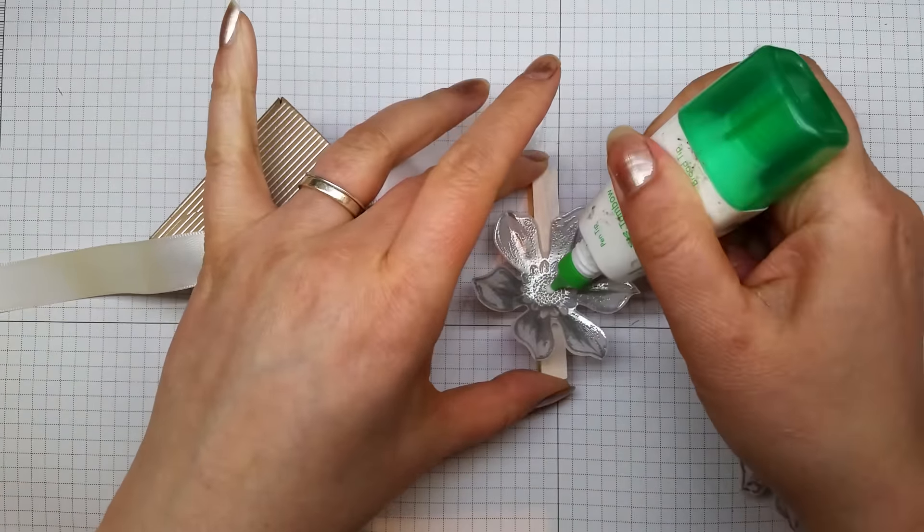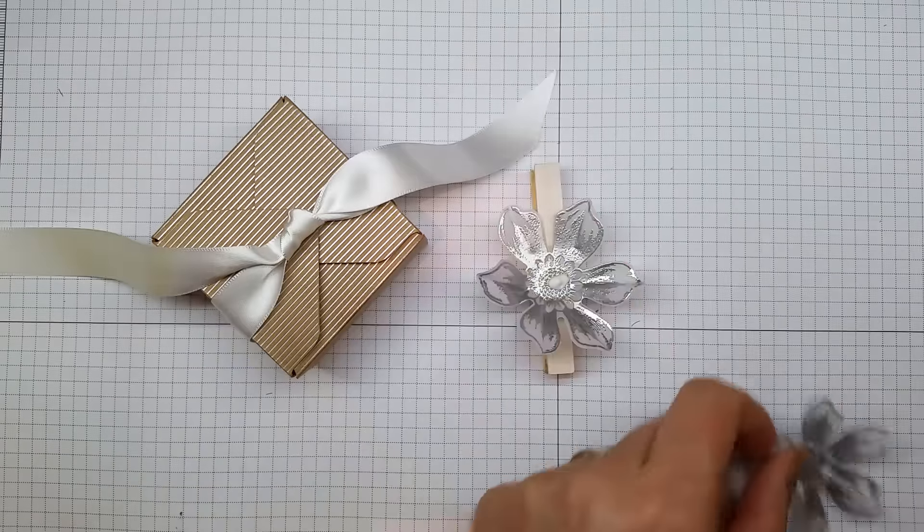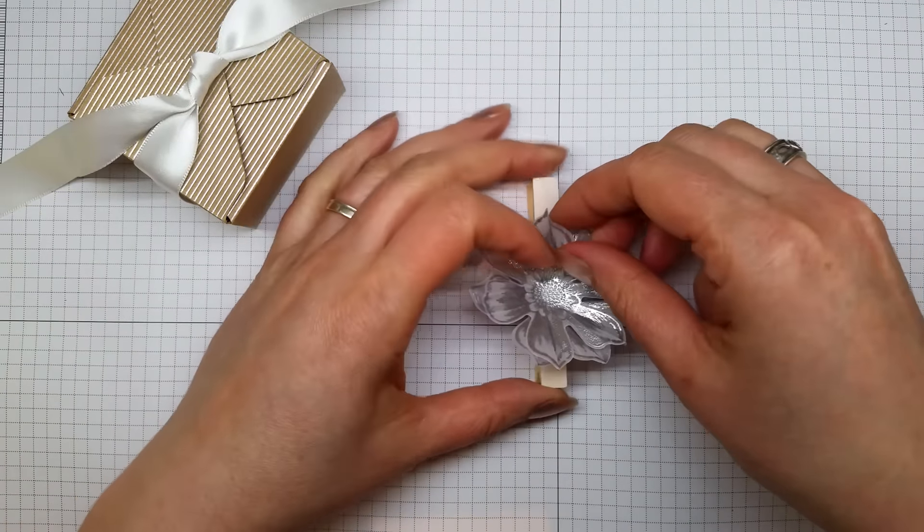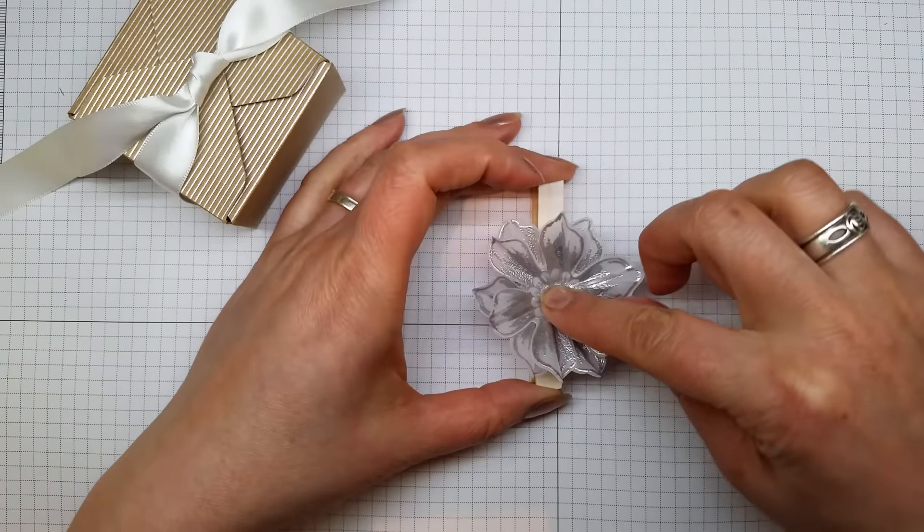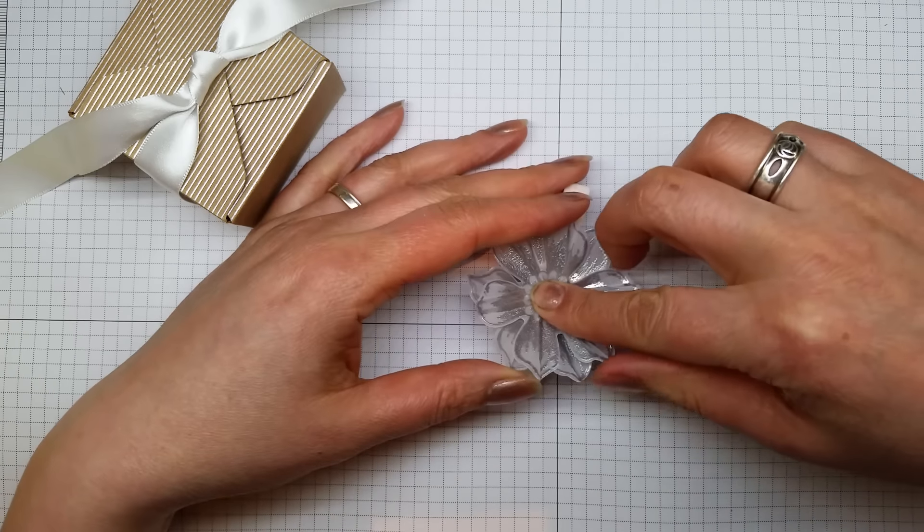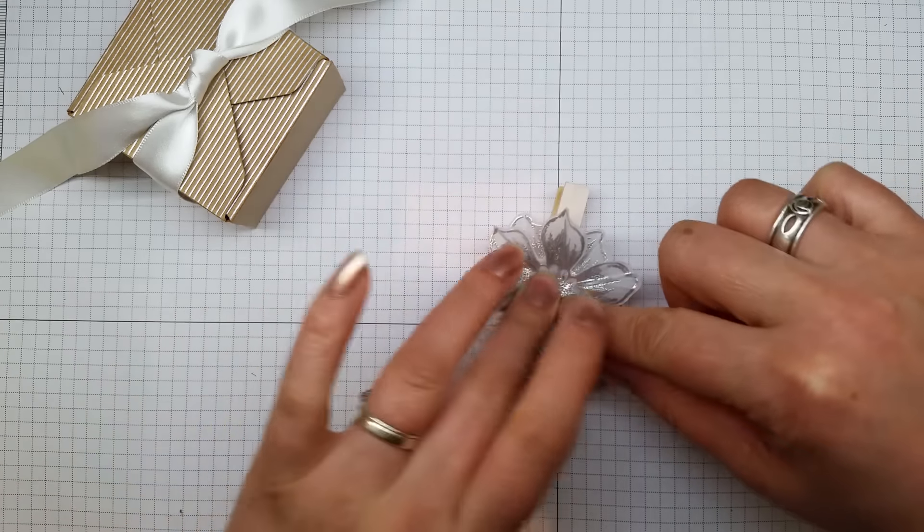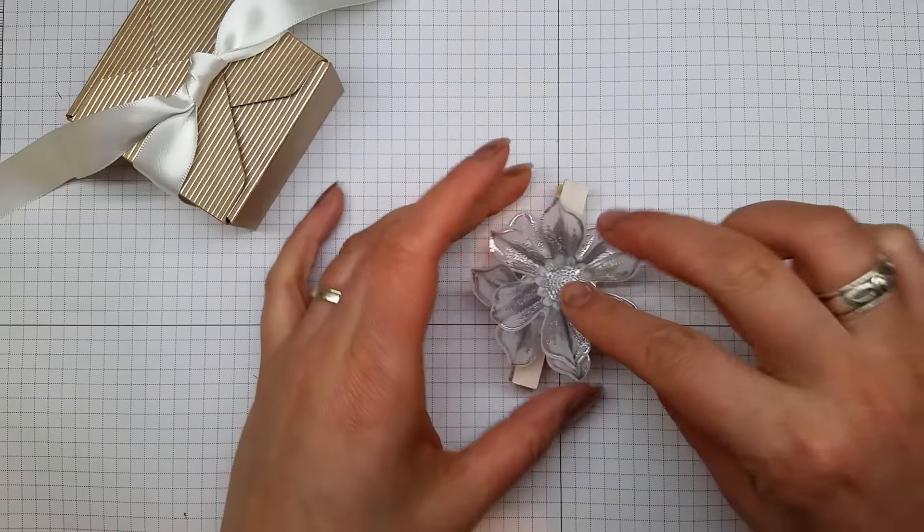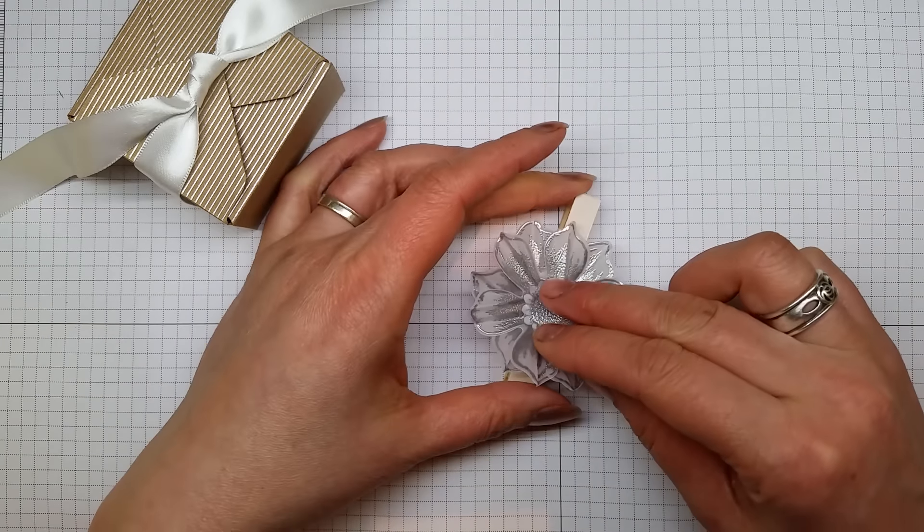Put a bit of glue in the middle of that one and then just offset the flower as you stick it down on the previous one. They like to jump around a little bit, so it's worth holding that down for a few seconds to make sure it's really stuck down.